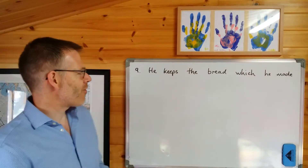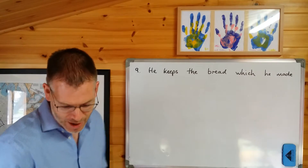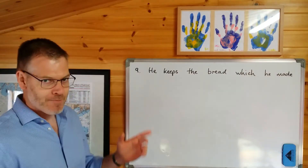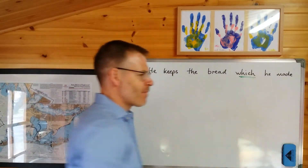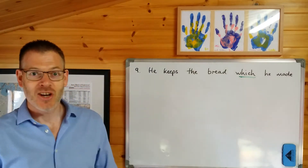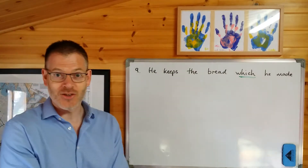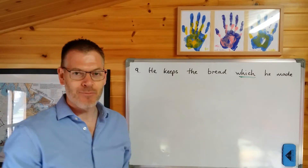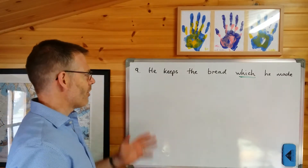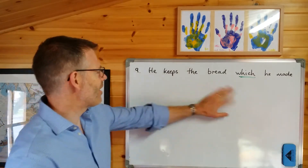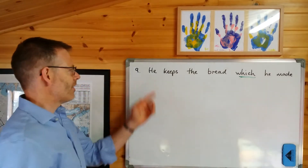So here's what we're doing. "He keeps the bread which he made." This is number nine from the halfway practice, and you can already see the relative pronoun. We need to work out how the rest of the sentence works and then figure out which relative pronoun goes in. Let's begin with the main clause: "He keeps the bread."